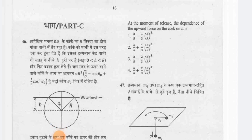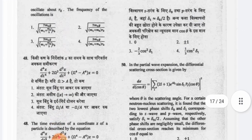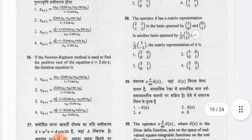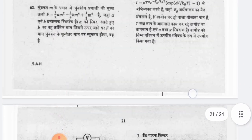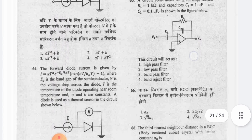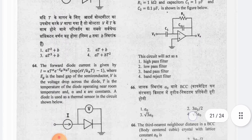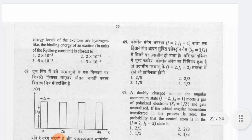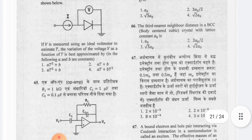Part C questions carry 5 marks each with a negative marking of 1.25 marks. There are around 30 questions and you have to attempt 20. The whole Section C is 100 marks, and the questions are at an advanced level — covering Nuclear Physics, Atomic and Molecular physics, and Solid State Physics. You should aim to do 8 to 9 questions, and doing 10 to 12 questions gives a good score.